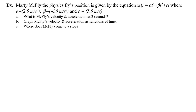Marty McFly the physics fly's position is given by x of t equals alpha t cubed plus beta t squared plus ct, where alpha is 2 meters per second cubed, beta is negative 6 meters per second squared, and c is 5 meters per second. What is McFly's velocity and acceleration at 2 seconds? Graph McFly's velocity and acceleration as functions of time, and where does McFly come to a stop?